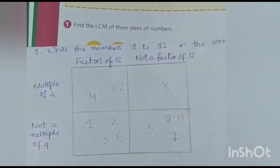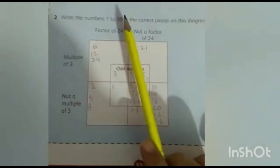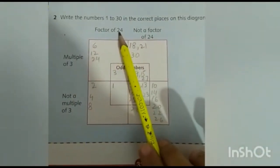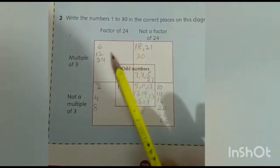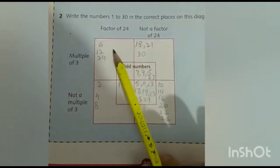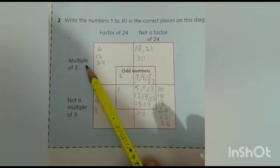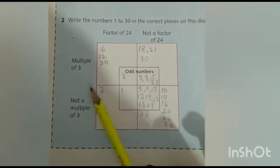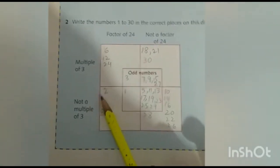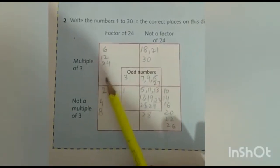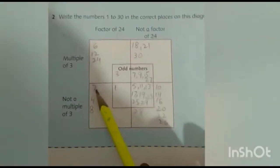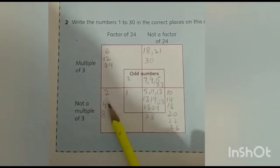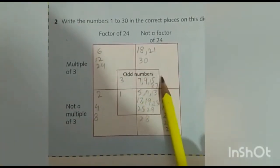We have finished numbers 1 to 12. Now we will solve question number 2. We will write numbers 1 to 30. We have a factor of 24 — that means the table which gives 24. We will write those here, and numbers that come in the 3 times table we will write here. Numbers in both the 3 times table and giving 24 go in the intersection. Like 2 is not in the 3 times table, and 2 times 12 gives 24.